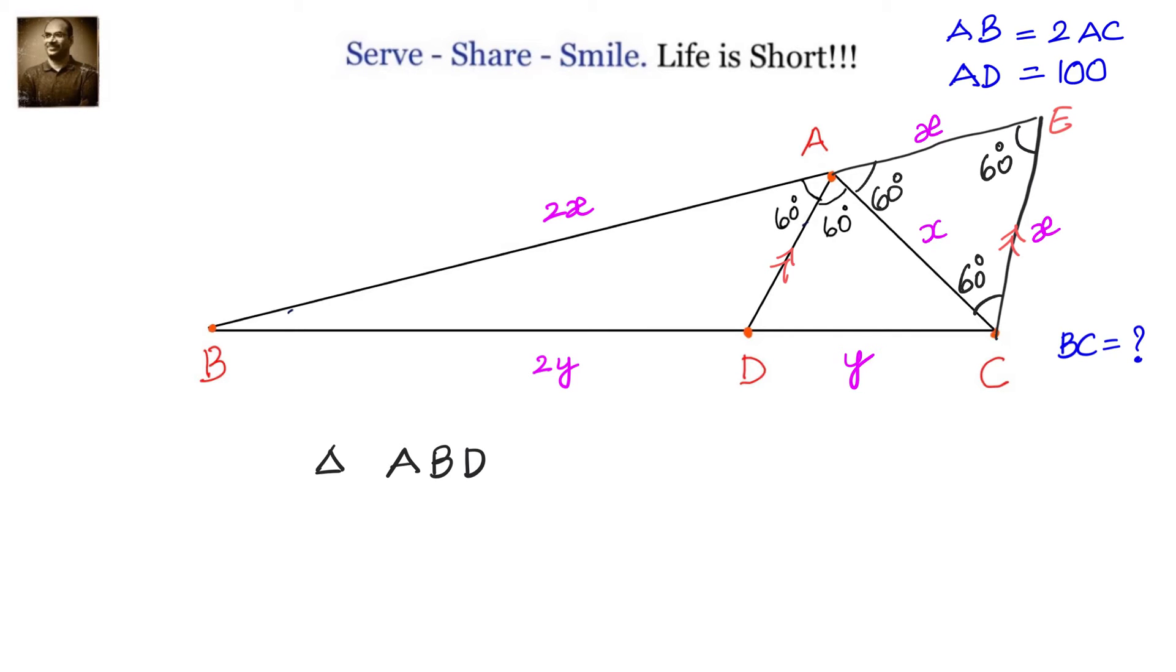Also, we can see that triangle ABD and triangle EBC are similar to each other by either AA similarity criteria or SAS similarity criteria.